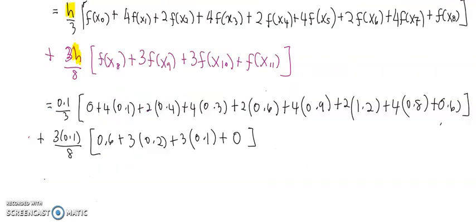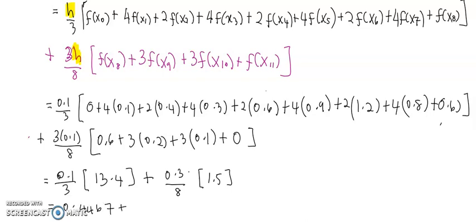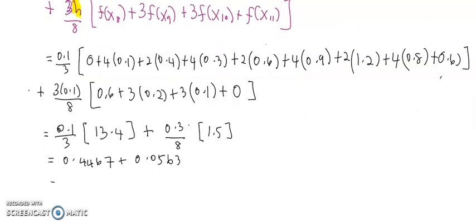Next step, just calculate the values using your calculator. This equals (0.1/3)(13.4) plus (0.3/8)(1.5), which gives 0.4467 plus 0.0563. The final answer is 0.5030.